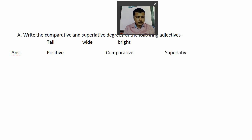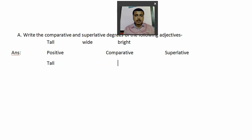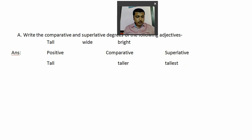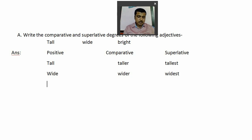Then superlative. You write it as it is. Under positive degree, the first question is 'tall' — T-A-double-L. The comparative form of 'tall' will be 'taller' — T-A-double-L-E-R — and the superlative form will be 'tallest.' Similarly, number two: 'white' — comparative will be 'wider' and superlative 'widest.' Number three: 'bright' — B-R-I-G-H-T — comparative form will be 'brighter' and superlative form will be 'brightest.'